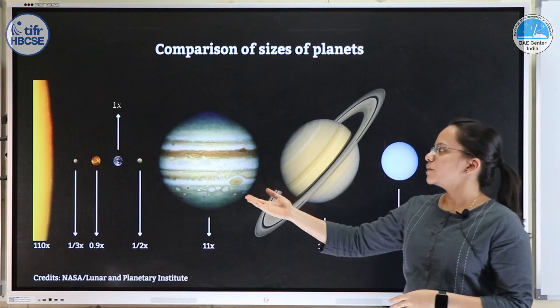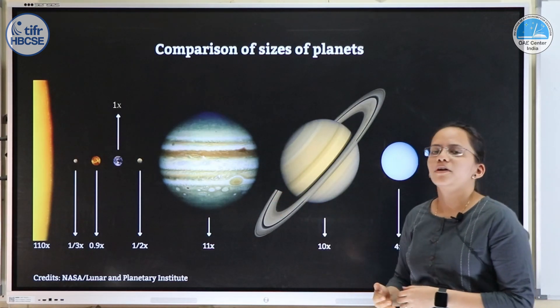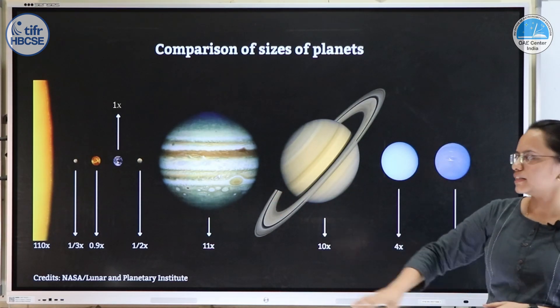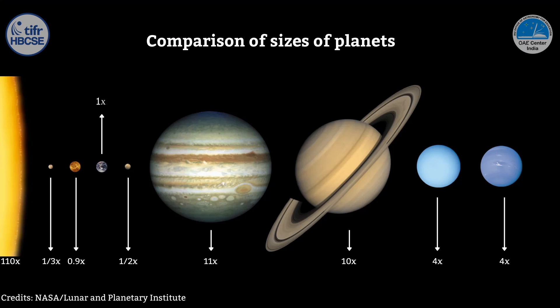In this image we have all the planets and the sun together. We have Earth, Venus which is roughly the same size as Earth, Mercury which is one third, Mars which is half, then Jupiter, Saturn, Uranus, and Neptune.